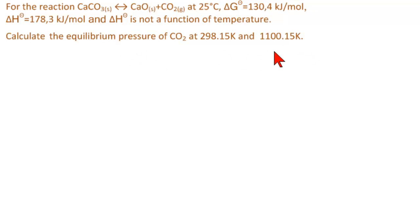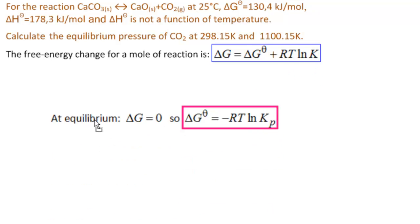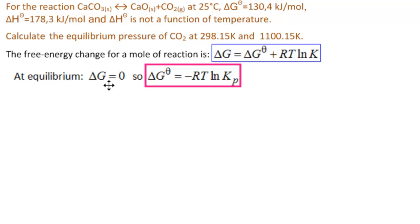So there are two problems here. The key point is that CaO and CaCO3 are both solids, so we are left with just the gas CO2. We know that the free energy change for a mole of reaction is ΔG = ΔG° + RT ln K, where K is the equilibrium constant. At equilibrium, ΔG is zero, so we get ΔG° = −RT ln Kp.